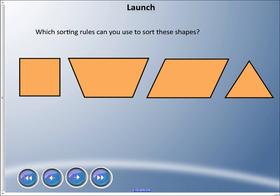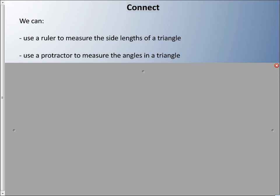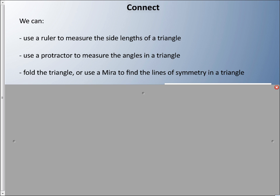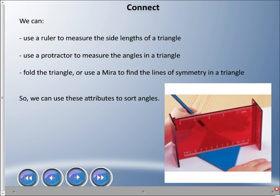We can do a few things when we're looking at shapes, and we're going to focus on triangles today. We can use a ruler to measure the side lengths of a triangle. We can use a protractor to measure the angles in a triangle. And we can use something called a mirror or fold a triangle so that we can find symmetry. If you draw a line down the middle of something, it should look the same on both sides. So we can use these attributes to sort triangles.